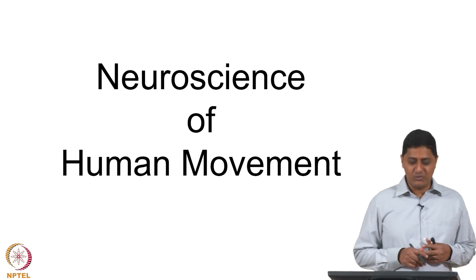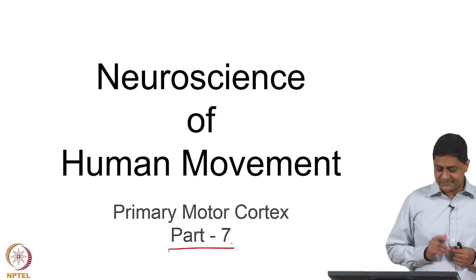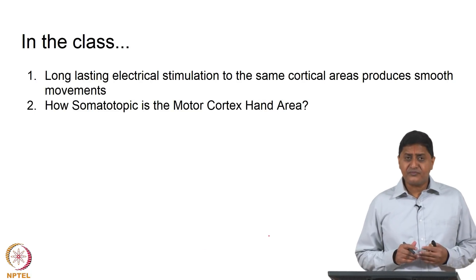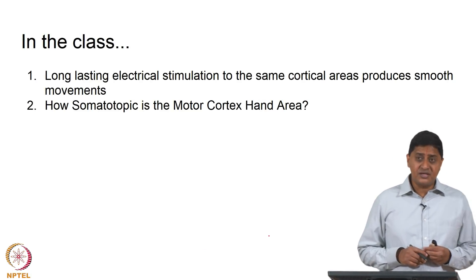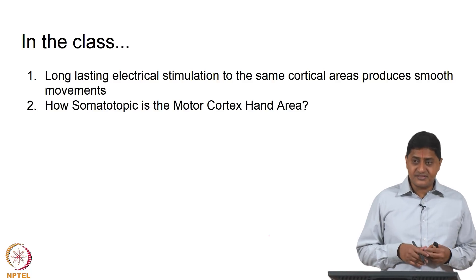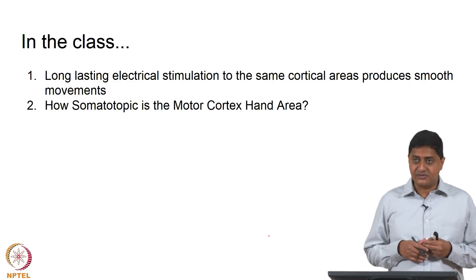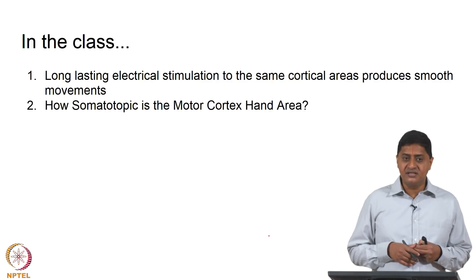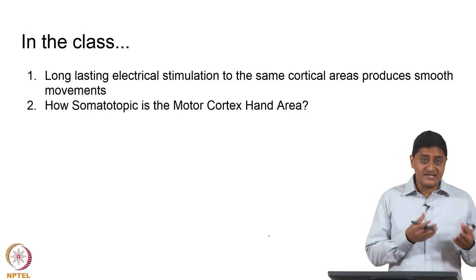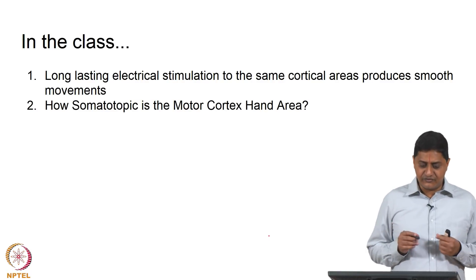Welcome to this class on Neuroscience of Human Movement. This is part 7 of our discussion on primary motor cortex. So far we have been discussing the activity of individual neurons, how that encodes force properties, movement properties, and directions. In other words, we have discussed the work of Evarts, Evfetz, Georgopoulos, Kalaska, and Andy Schwartz.